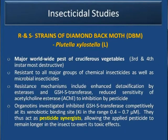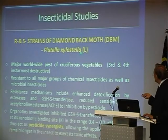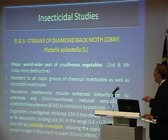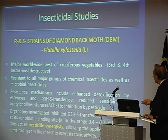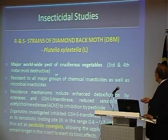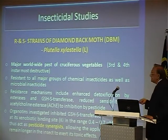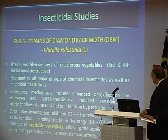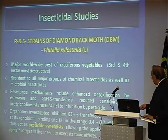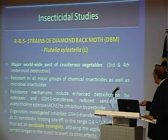We then looked at studies on insects. We picked the diamondback moth, Plutella xylostella, which is a major worldwide pest of cruciferous vegetables such as cauliflower and cabbages. It is not the moth itself but the third and fourth instar larvae which are the most damaging. It has become resistant in Cameron Highlands, resisting all major groups of insecticides. We looked at organotins and found that in many ways organotins were more successful. They behaved like pesticide synergists, allowing the pesticide to remain longer in the insect to exert its toxic action.